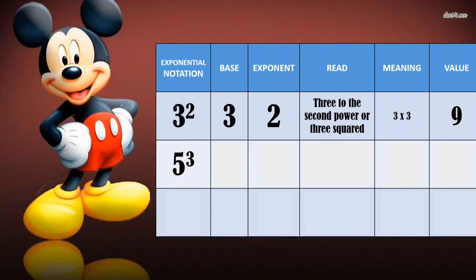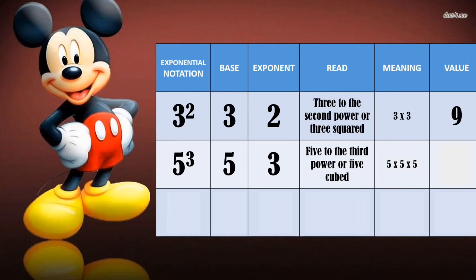Next, the base is 5 and the exponent is 3. We can read it as 5 to the 3rd power or 5 cubed. Meaning, 5 times 5 times 5. And the value is 125.